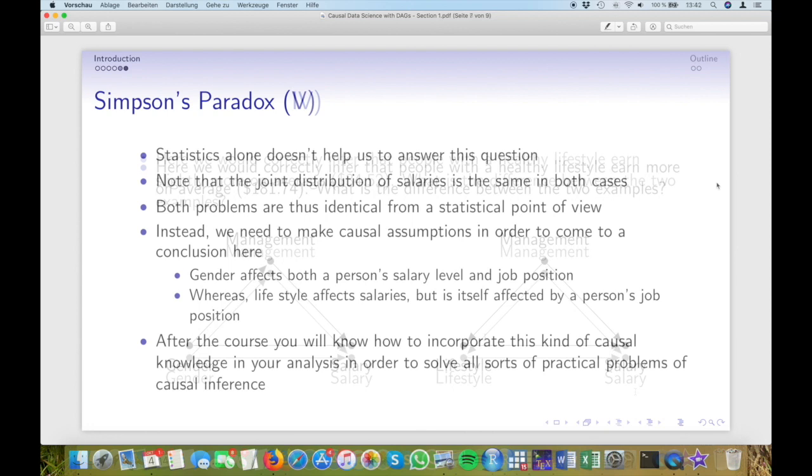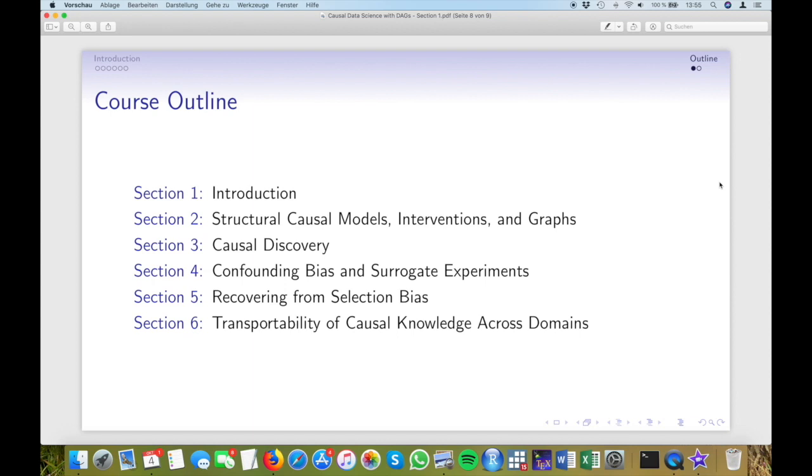What this shows you is that statistics alone isn't enough to get a solution here. After all, the data were exactly the same in both examples. So from a statistical point of view, they are indistinguishable. But it all depends on the causal assumptions you impose on the problem. In the first example, gender causally affected job position. And in the second example, job position caused lifestyle. This seemingly small difference has a huge impact on the results we obtain. Depending on which version of the gender pay gap you compute, you either decide for the right action to fight gender-based discrimination in your organization, or you come exactly to the opposite, wrong conclusion. This course will put you into the position to incorporate exactly this kind of domain knowledge into your analysis in order to draw the right causal conclusions.